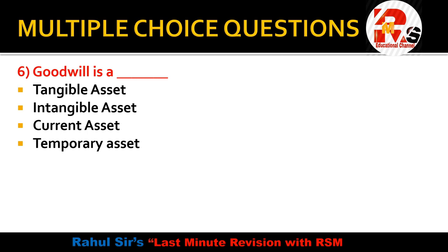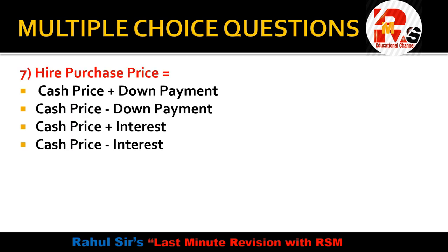Question six: goodwill is a dash asset — options are intangible asset, tangible asset, current asset, or temporary asset. Goodwill is a type of fixed asset, and fixed assets are divided into tangible and intangible. Goodwill is an intangible asset because we cannot see goodwill — we can only feel it. It represents a name, reputation, corporate standing, and market image. Goodwill, patents, copyrights, and trademarks are all intangible assets. So the right answer is intangible asset.